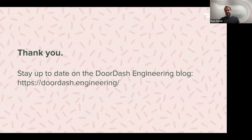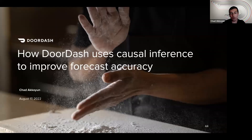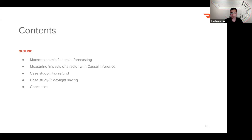Thanks for tuning in and learning about the forecasting platform. Please stay up to date on the engineering blog. Next up is Chad, who is also on the forecasting team and will talk about how we use causal inference. Chad: Hello, my name is Chad. I'm working at the forecasting team together with Ryan. Today I will talk about how we use causal inference in order to improve forecast accuracy at DoorDash. First I'll talk about macroeconomic factors and causal inference, then present two case studies that we actually experienced at DoorDash, and conclude afterwards.